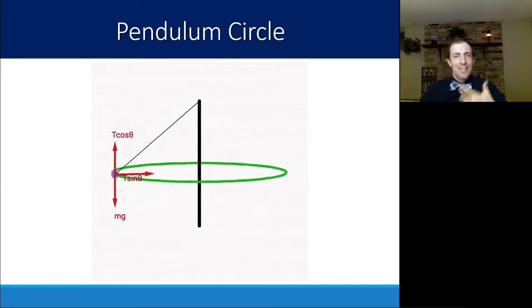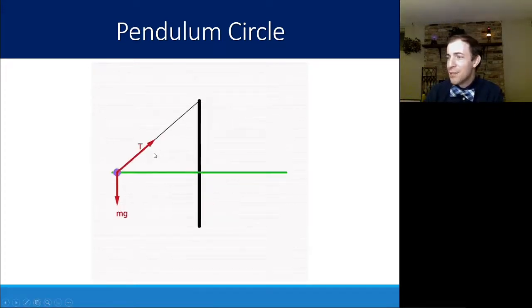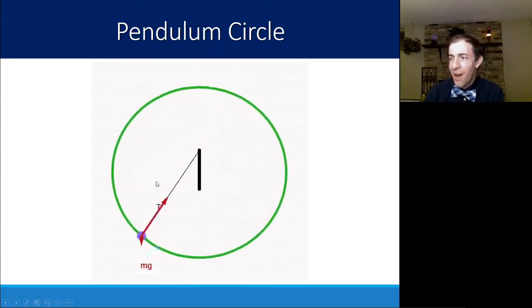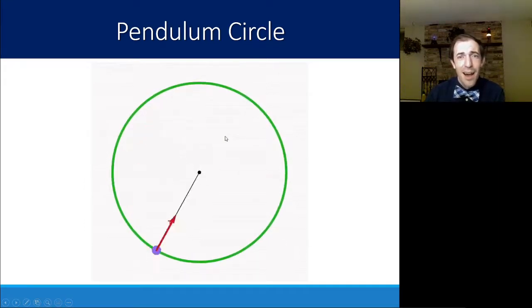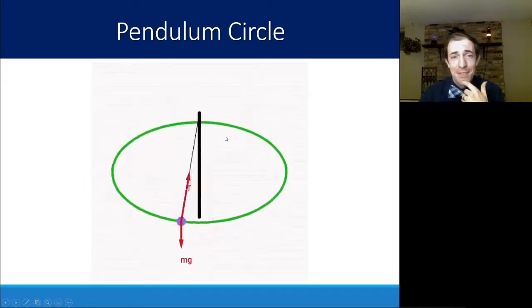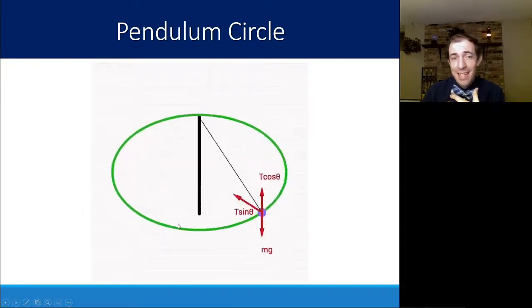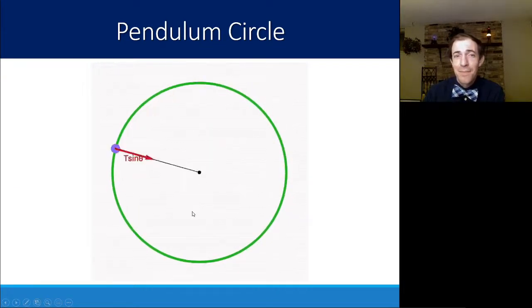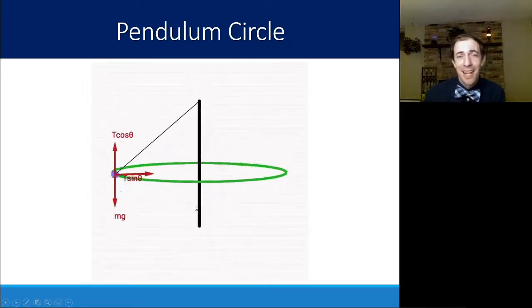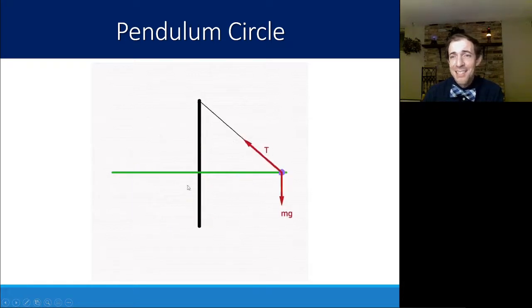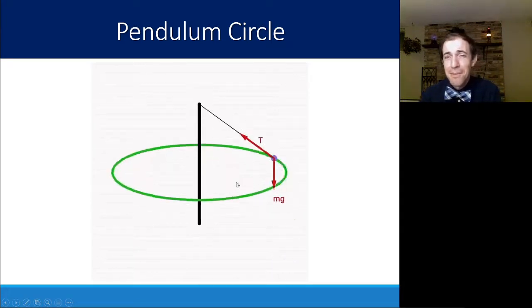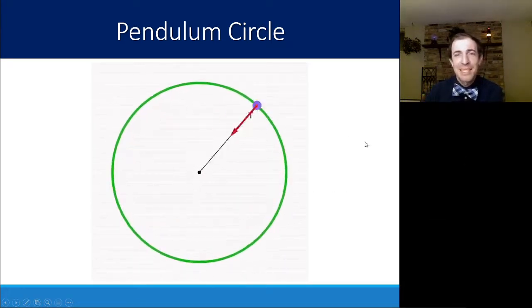You've got a tension force that's pulling along with the rope at whatever angle that happens to be, and the force of gravity mg pointing down. But you see, you can also break that tension force into components going up with the sine and the cosine of the angle, and it's that sine of the angle, that horizontal component, that's pointing towards the center.